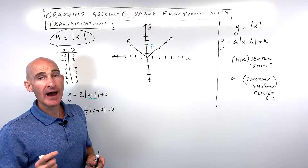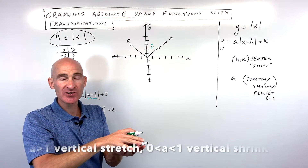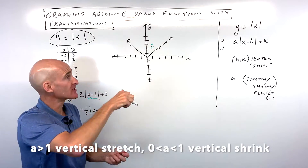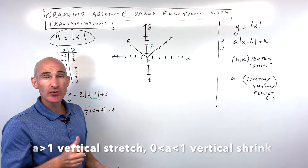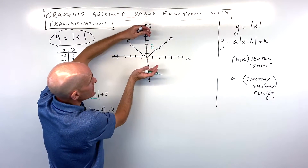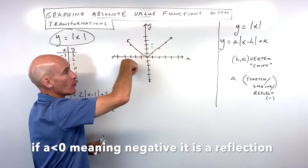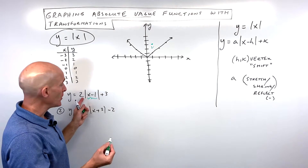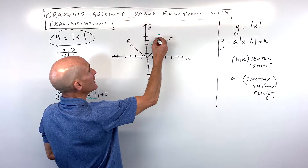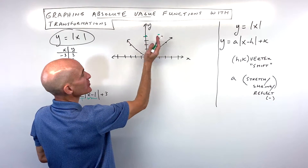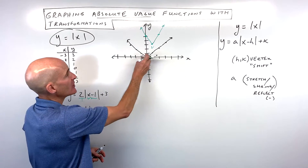You have two options for graphing. I like to look at the number in front of the absolute value — that's the 'a' value — which stretches, compresses, or reflects the graph. If a is greater than one, it's a vertical stretch, pulling the graph vertically and making it narrower. If a is between zero and one, like one-half or one-third, it's a vertical shrink — compressing toward the x-axis and making the graph wider. If a is negative, it reflects the graph so it opens downward. In this case, a is two, which is like a slope of two over one: rise two, run one in both directions from the vertex, since the graph is symmetric. The graph is narrower due to the vertical stretch, shifted right one and up three.